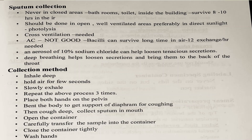Deep breathing helps loosen secretions and bring them to the back of the throat. Collection method: inhale deep, hold air for a few seconds, slowly exhale, and repeat this process three times. Place both hands on the pelvis and bend the body to get support from the diaphragm for coughing. Then cough deep, collect sputum in the mouth, open the container, carefully transfer the sample into the container, close the container tightly, and wash hands.